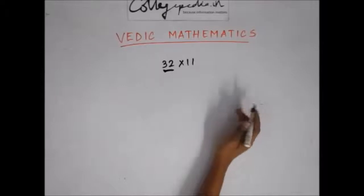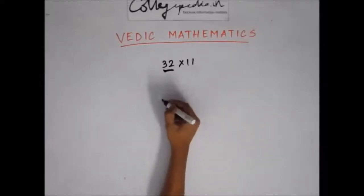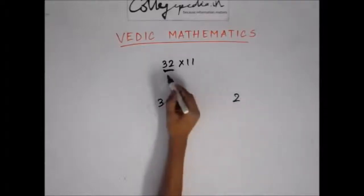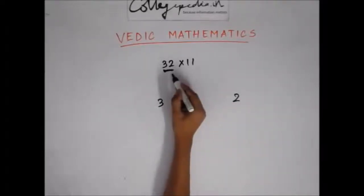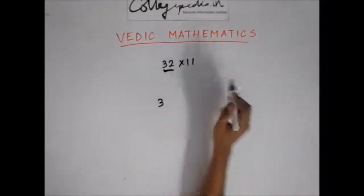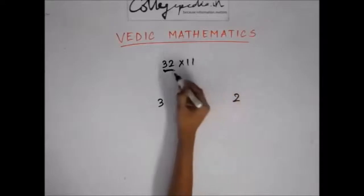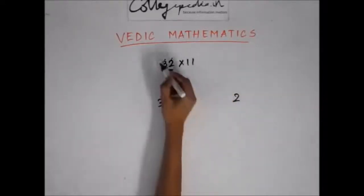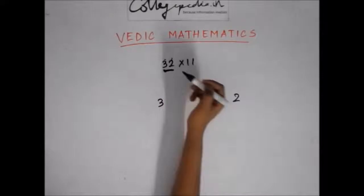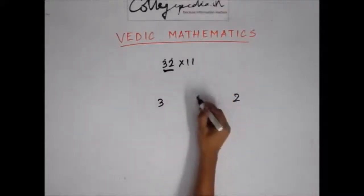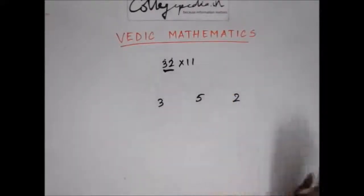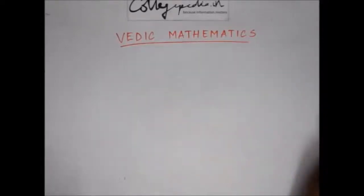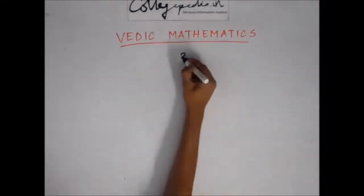The trick is: take the number and in between the original digits — that is 3 and 2 — put the sum of the digits, taking two at a time. The digits are 2 and 3, so I'll find their sum which is 5. So my answer is 352.